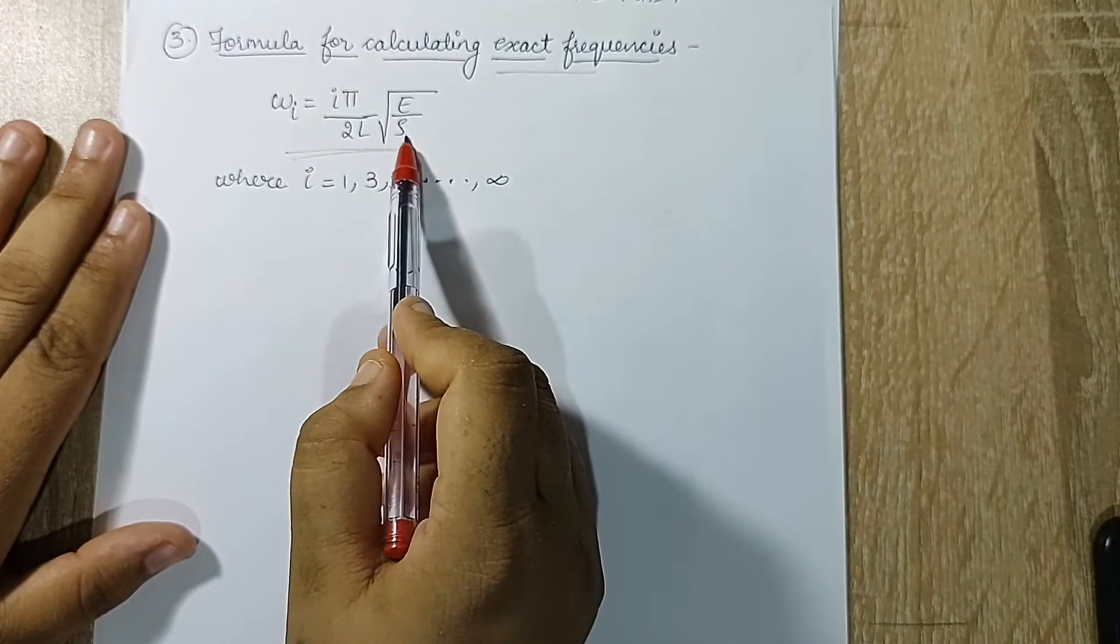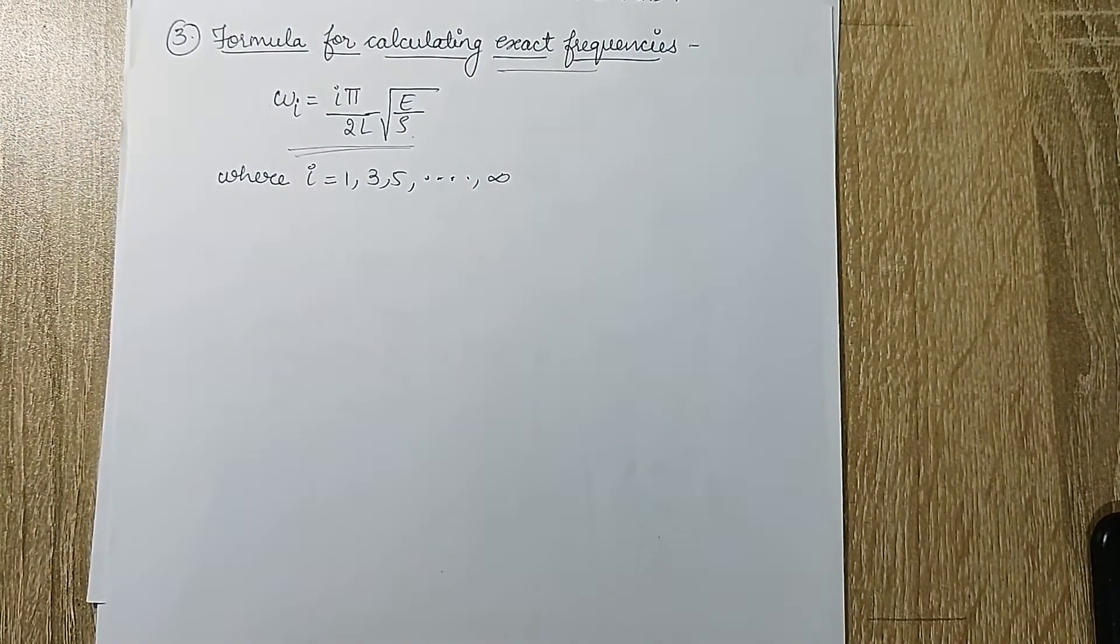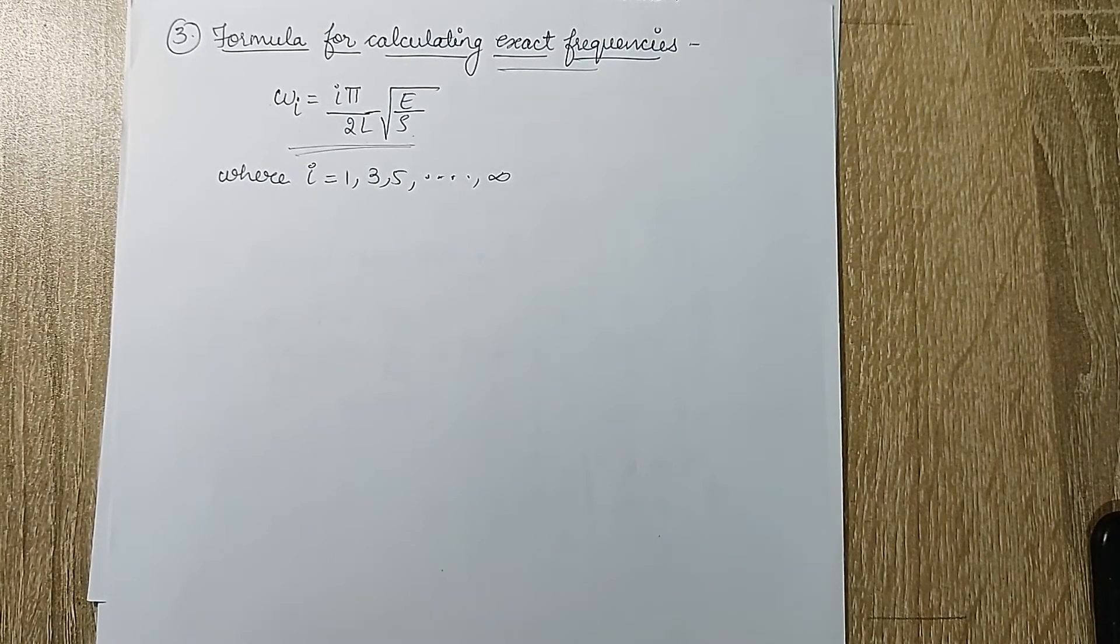L will be given to you always, the length of the beam. E is the Young's modulus of the beam, and rho is the density of the material which is used for the beam. So these are the formulas that we are going to use for solving the numericals of this chapter.